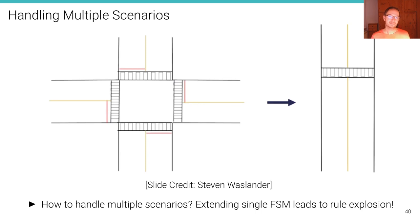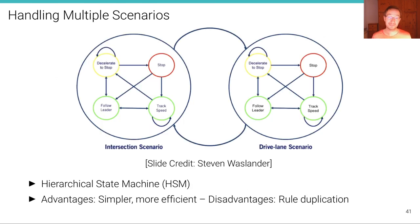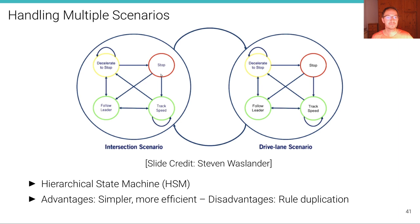The question is: how can these simple finite state machines be extended to much more sophisticated maneuvers, and how to handle multiple scenarios — for example, an intersection scenario and a highway driving scenario — where the states and transitions might be quite different? If we extended a single FSM, this would lead to an explosion of rules. A better approach is to use a hierarchical state machine, where we have meta-states such as the 'intersection scenario' state and the 'drive lane scenario' state, and we can transition between these meta-states.